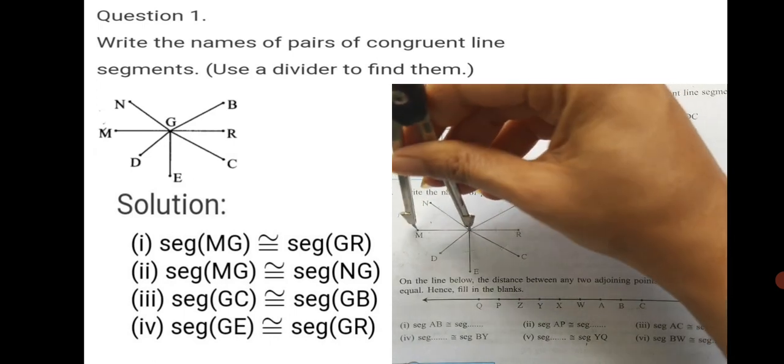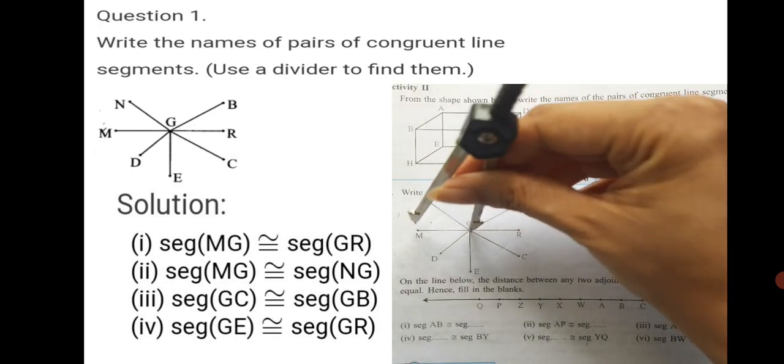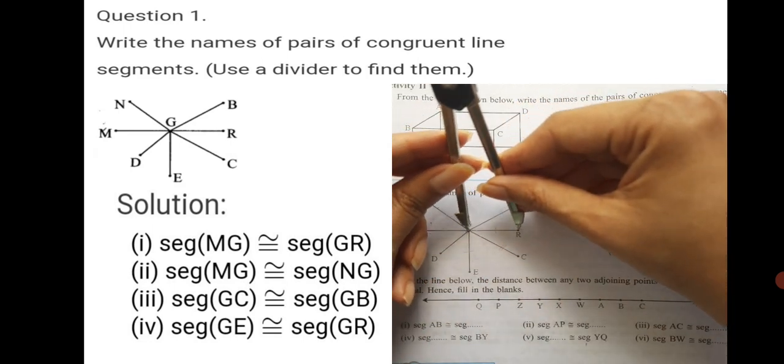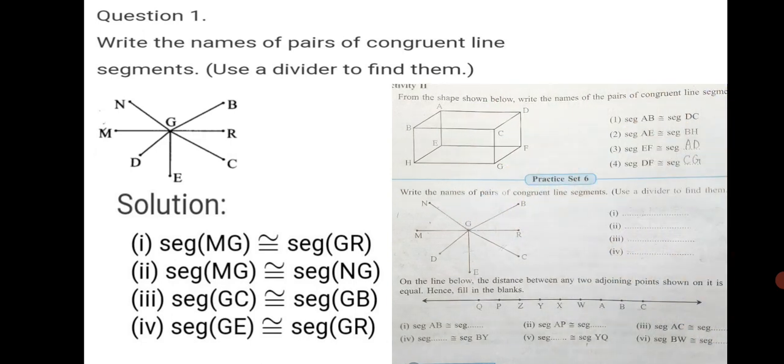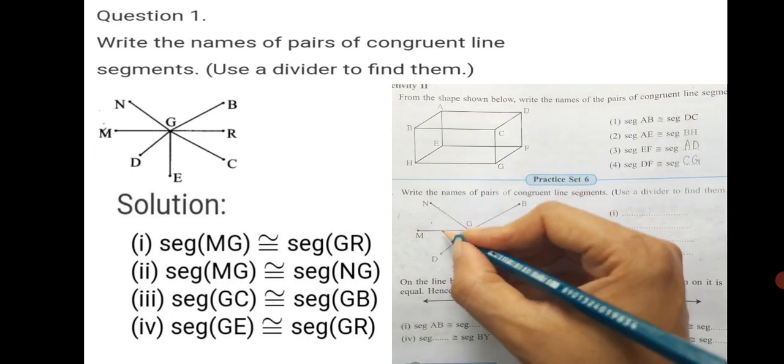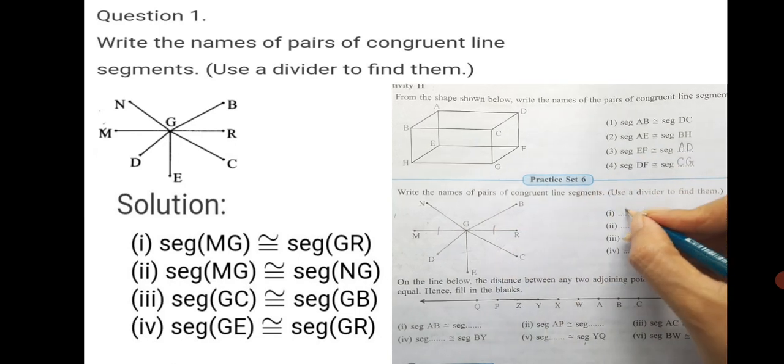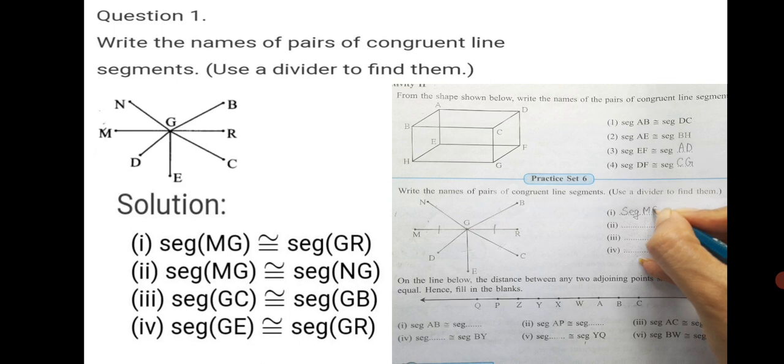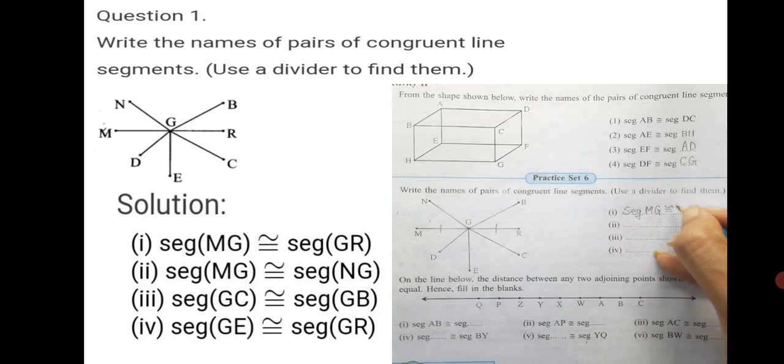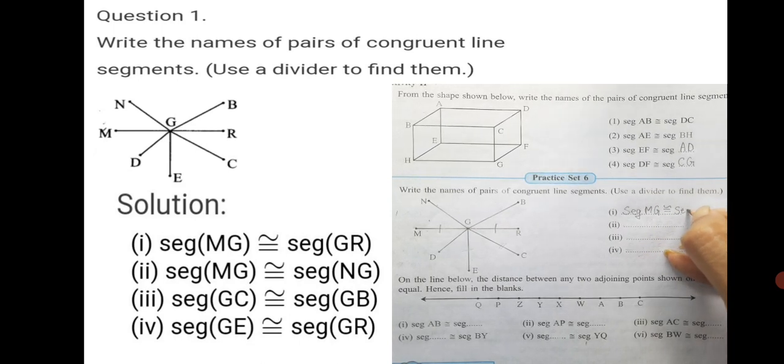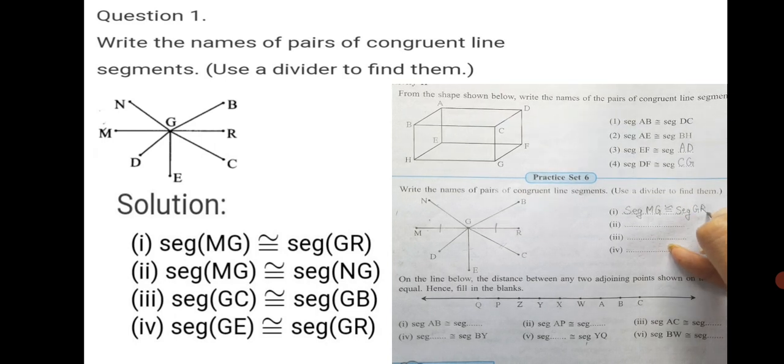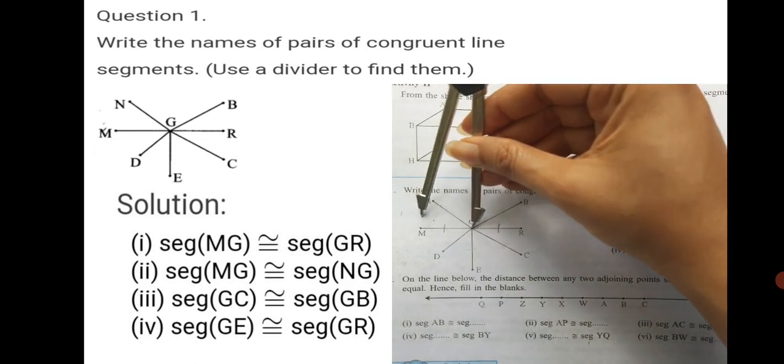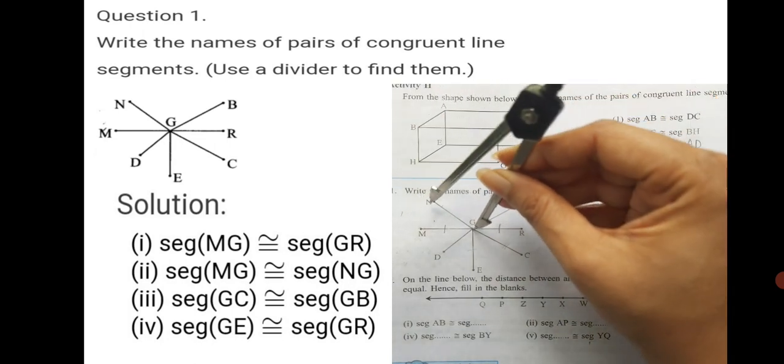In your textbook on page 8, you have practice set 6. In the divider, we measure GM and then from G, we measure GR. It's exactly the same. Without shifting the distance, if we get same, we mark that GM is same as GR and we write seg GM congruent or MG. One and the same. Congruent to seg GR. Seg MG congruent to seg GR. A segment can be read from any end, MG or GM.